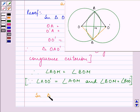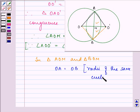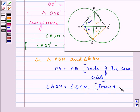Further, in triangle AOM and triangle BOM, OA is equal to OB, that is the radius of the same circle. Angle AOM is equal to angle BOM that we have proved in first, and OM is equal to OM, that is common.